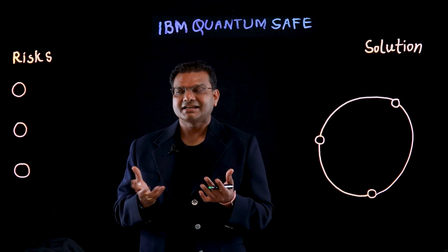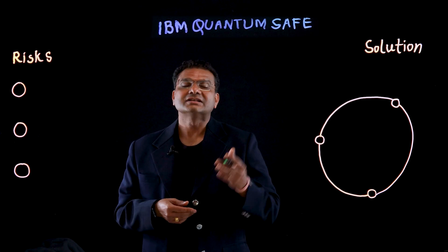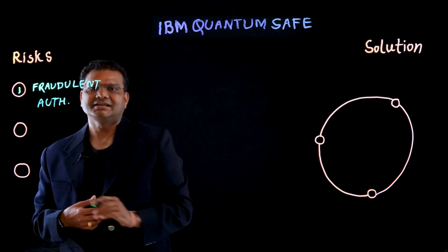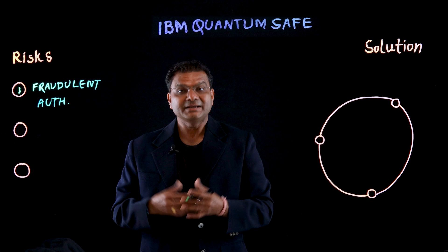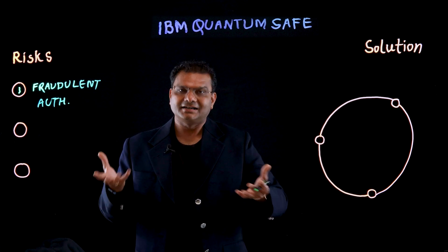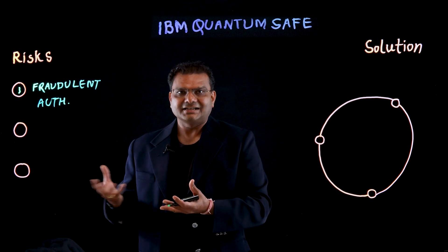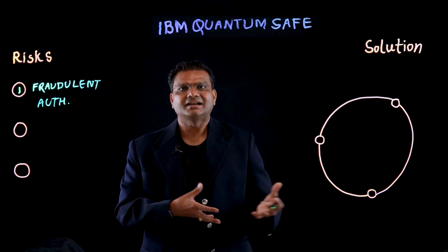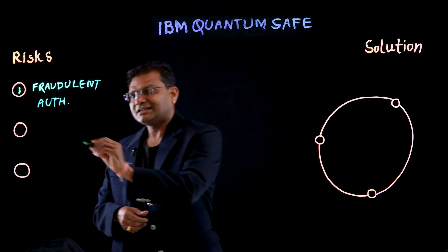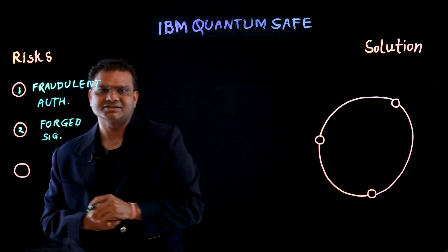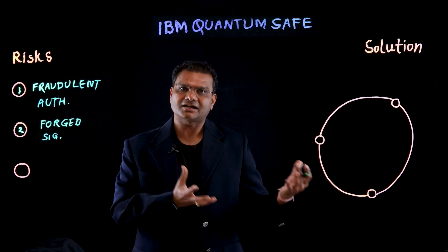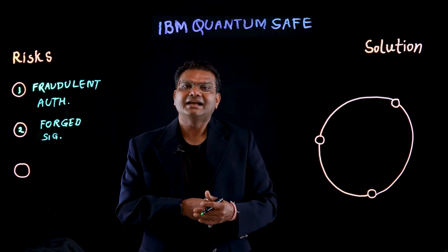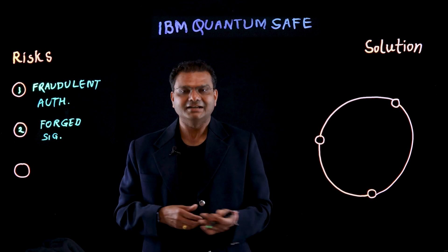What can bad actors and cyber criminals do once quantum computers mature? The first thing they can do is fraudulent authentication, which means they can get access to our secure data in our applications, systems, and databases. The second thing they can do is forge signatures, which means they can fake records, fake audits, create fake identities, and tamper with our blockchain assets as well.